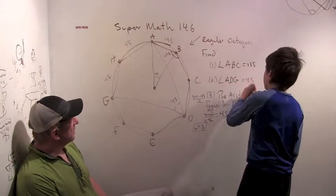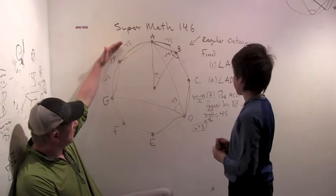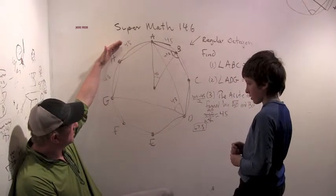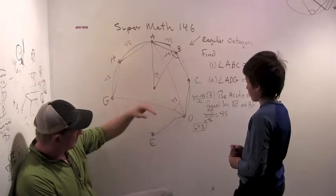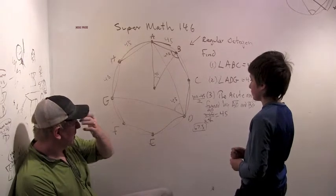So you use the idea that you have, you can easily calculate the arcs here. Yeah. To find those angles that are inscribed in the circle. Okay. Super.